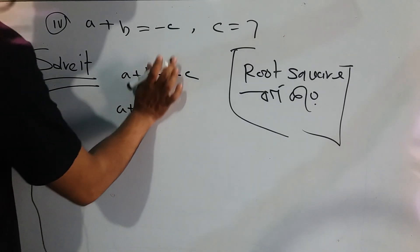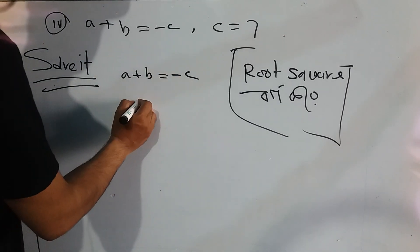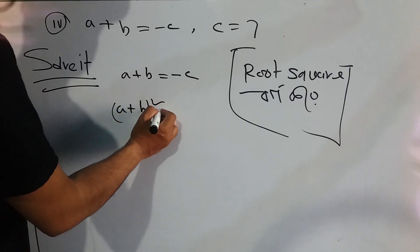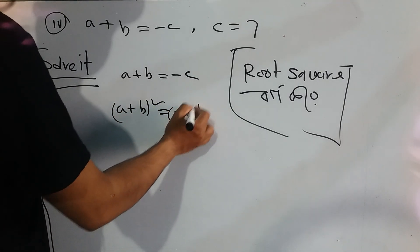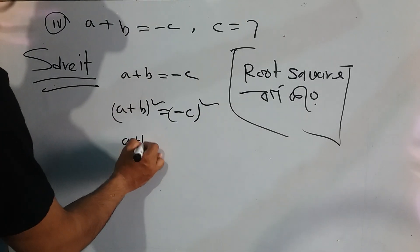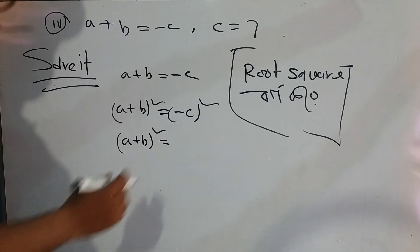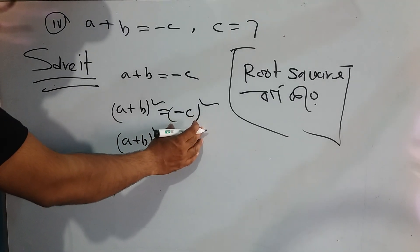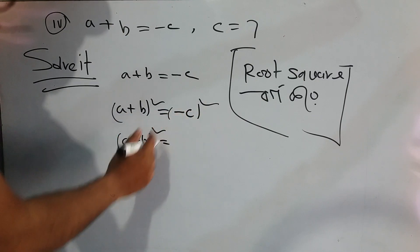So a plus b, a plus b whole square equals minus c whole square. A plus b squared, and we are following the right side.